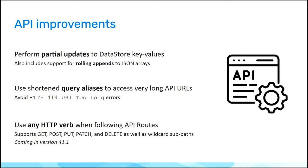Rolling appends is a very interesting feature as well. You can add something to a list and ensure that list has a maximum size. For example, you can say: I want to add a new item to this list, but if there are more than three items after it's added, I want to get rid of the oldest ones. So you can do a rolling append to a list, which is a very powerful feature.